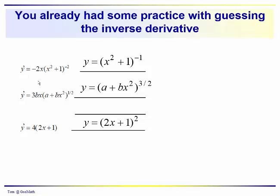The kinds of problems that you've already been working with are shown here. We have the derivative — we know what the derivative is — and so it's kind of a guessing game: what was it that we had to differentiate in order to get this? We found that was x squared plus one to the minus one power. Likewise, with these derivatives we guessed, we reasoned backwards, that we'd have to differentiate something like this in order to get this term.